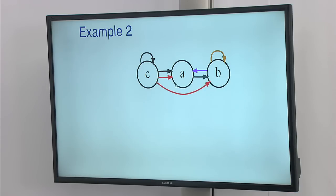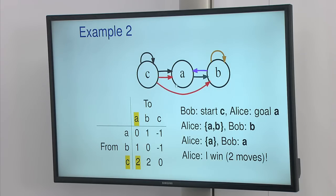A little bit more complicated example, slightly more complicated is example two. There are three positions. So if Bob starts at C, and Alice's goal is to drive him to A, starting from position C, Alice has two sets to choose from, black or red,